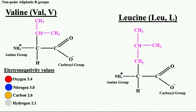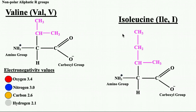Valine (three-letter code VAL, one-letter code V) has a CH3-containing side chain. Leucine has two CH3 groups, and isoleucine's structure is similar to leucine but slightly different, with an additional CH3 group. In valine, leucine, and isoleucine, there is an even distribution of charges in the CH3 groups, making them non-polar and unavailable for interaction with water.